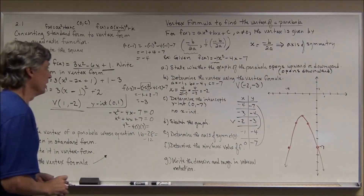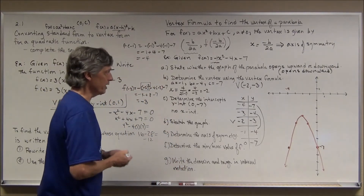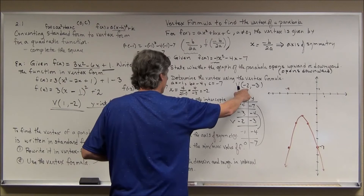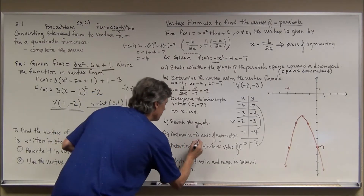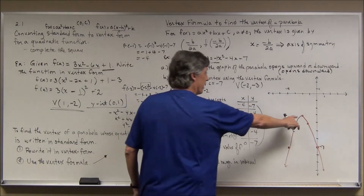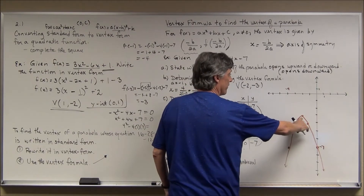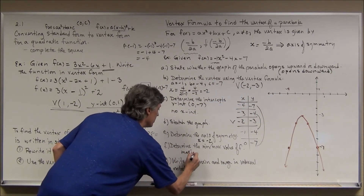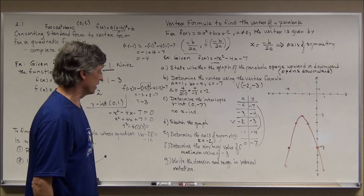The axis of symmetry is the vertical line through the vertex, so it's x = -2, which matches -b/(2a). The function has a maximum value — not a minimum — because it opens downward, so the vertex sits at the top. That maximum value is the y-coordinate of the vertex, which is -3. So the maximum value of f is -3.